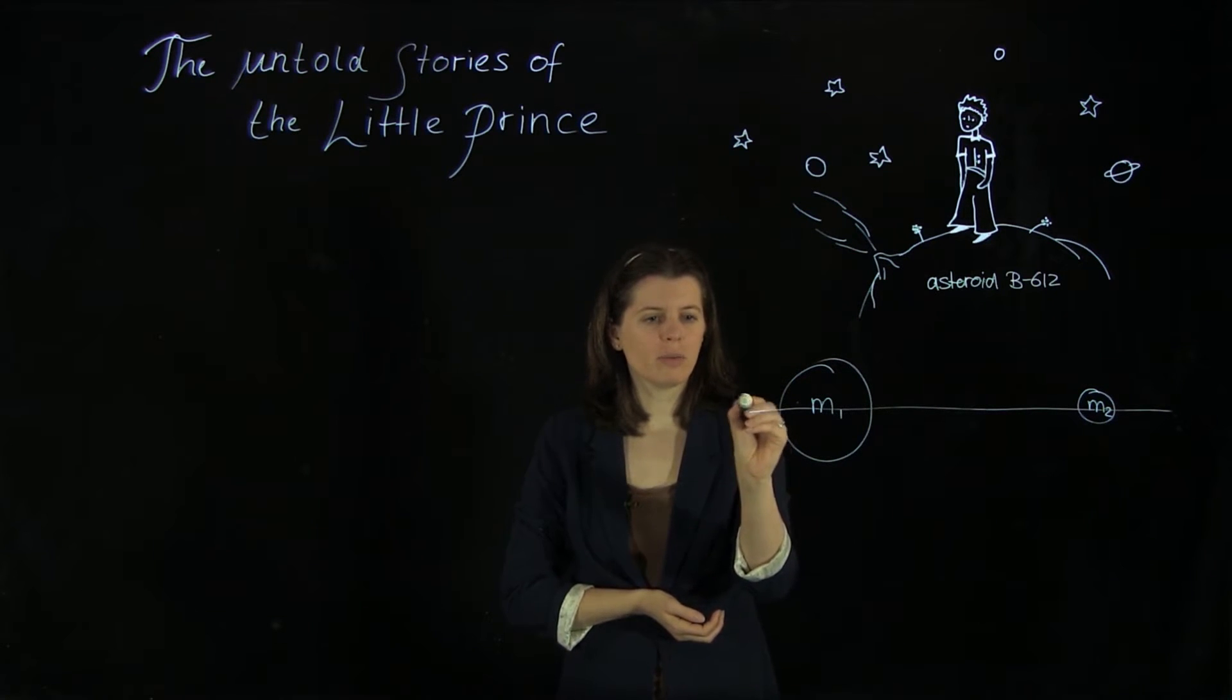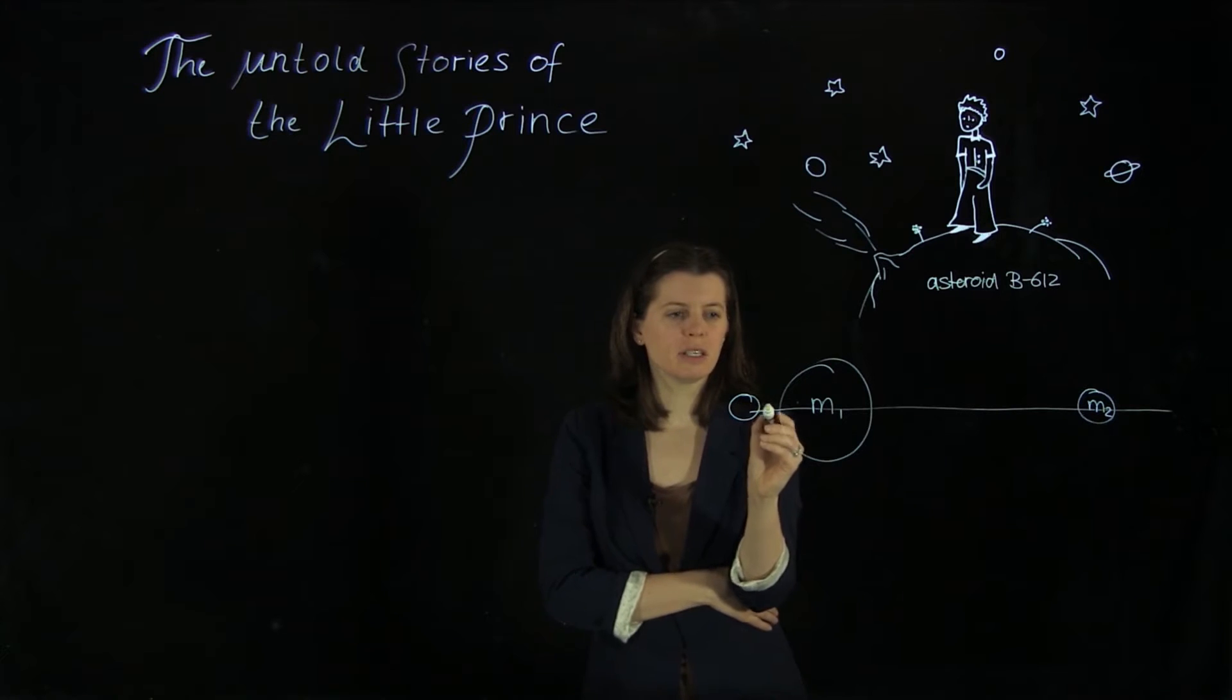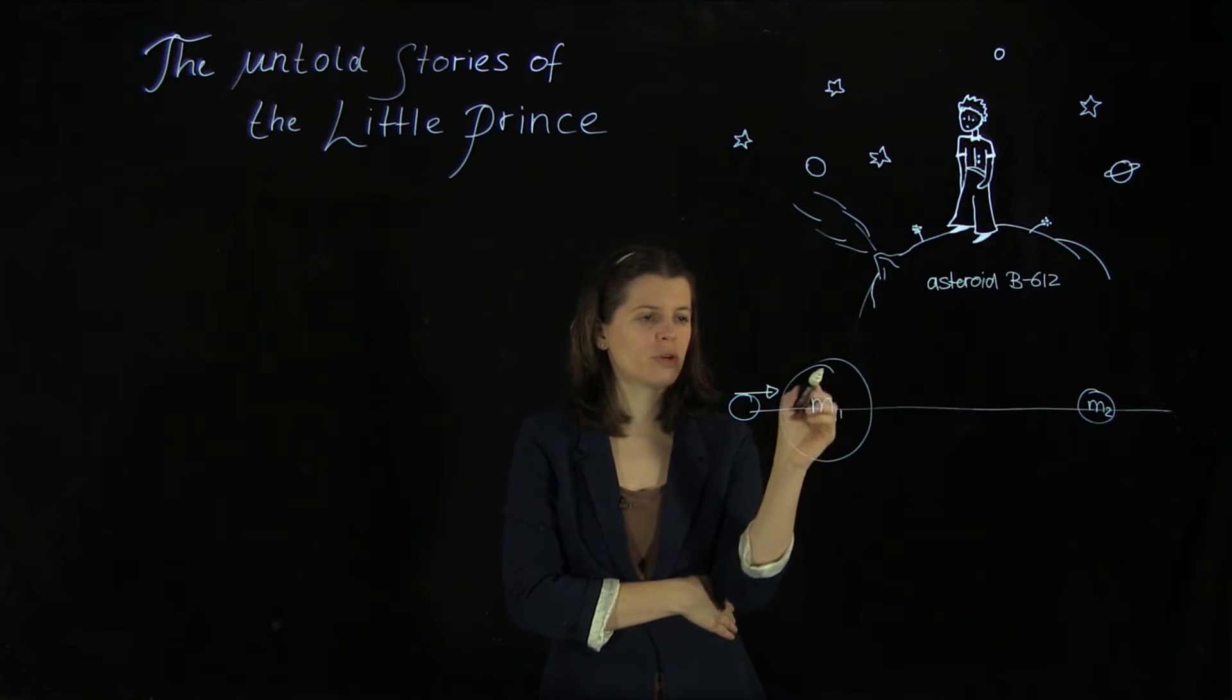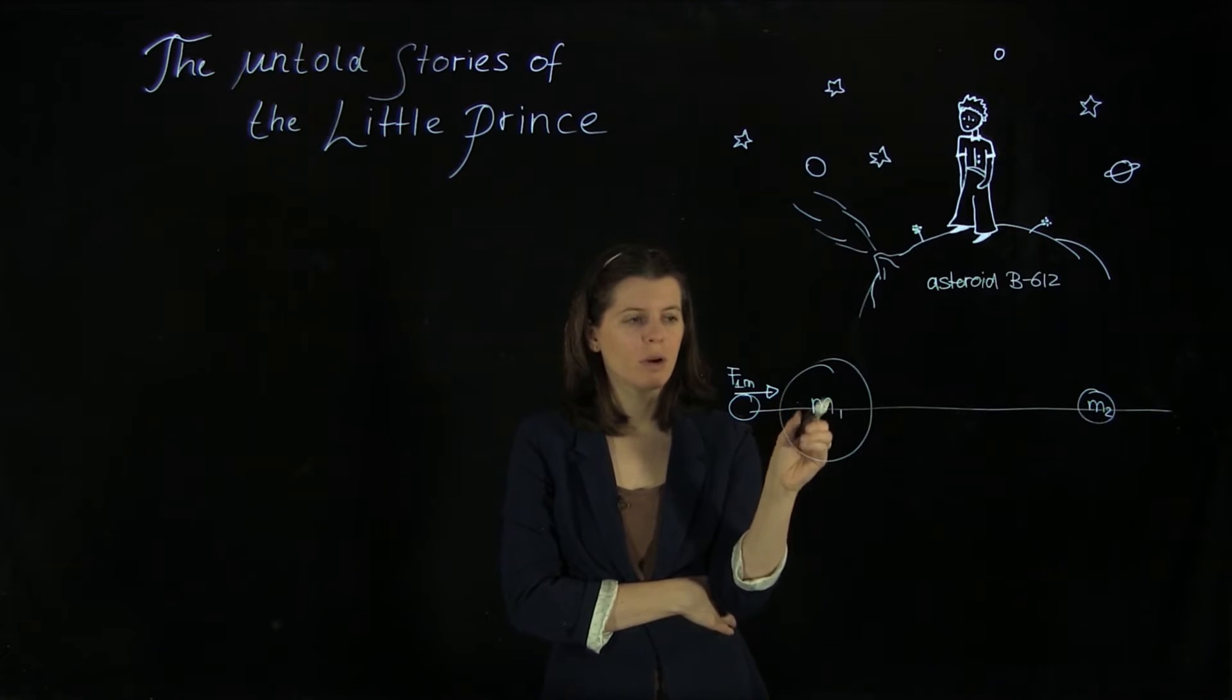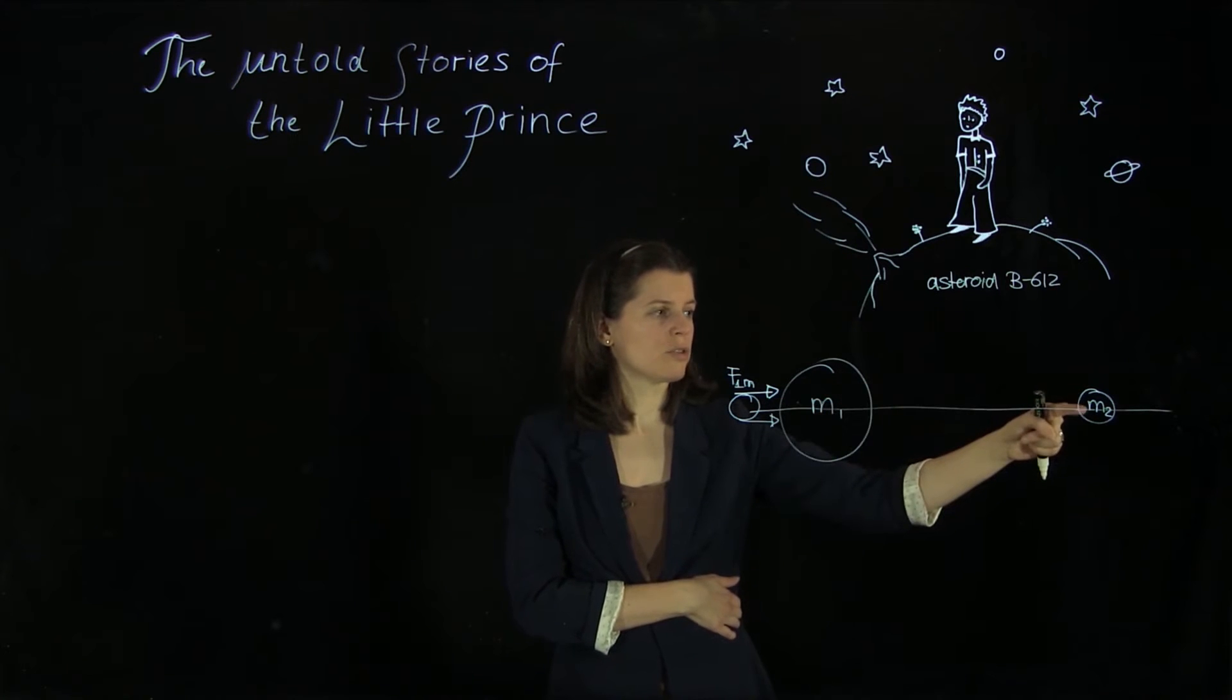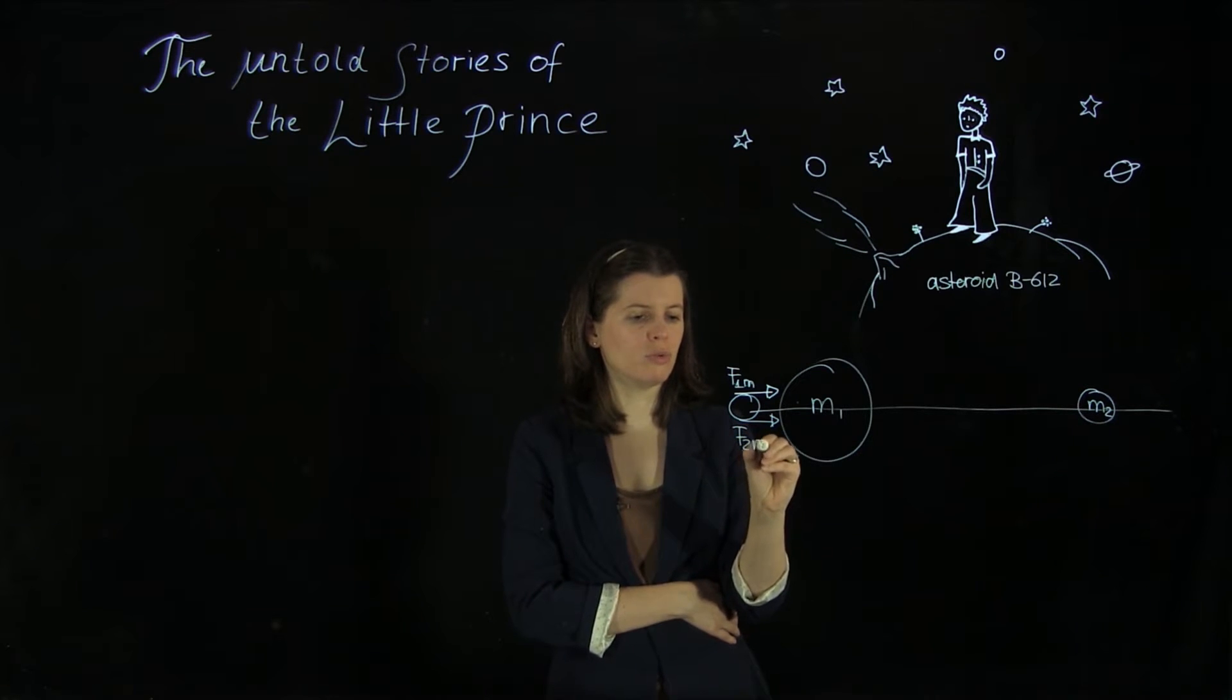So let's start by placing the little asteroid over here. And what is this body experiencing in terms of gravitational forces? Well, it's going to experience a gravitational force of object 1, so we have F1m due to the interaction between object 1, the businessman planet and our little asteroid here. And then we also have the same direction here due to the interaction of object 2 and our little asteroid, so that would be F2m.